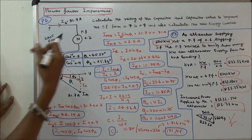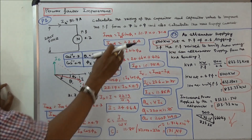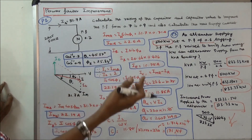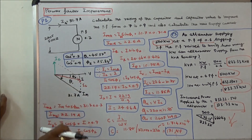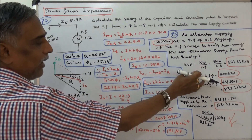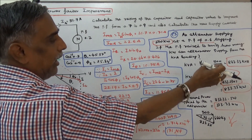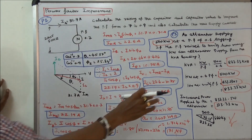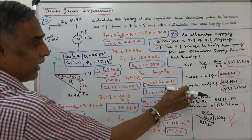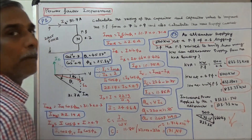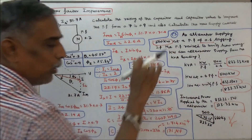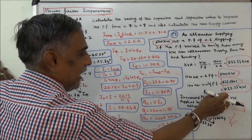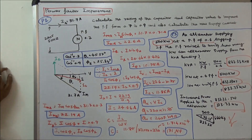The third problem: an alternator supplying 500 kW at a power factor of 0.6 lagging. If the power factor rises to unity, how many kilowatts can the alternator supply from the same kVA loading? KVA = kW / power factor = 500 / 0.6 = 833.33 kVA — that is the rating of the alternator. At unity power factor, it supplies 833.33 kW, an increase of 833.33 − 500 = 333.33 kilowatts.